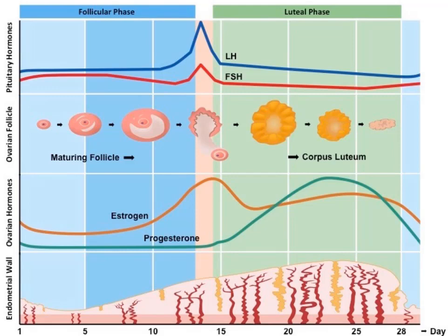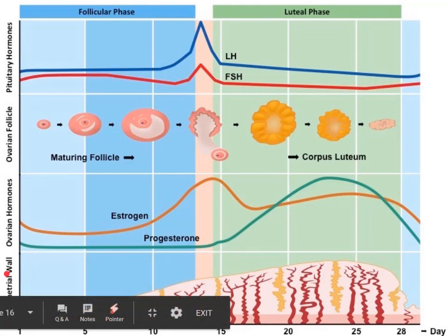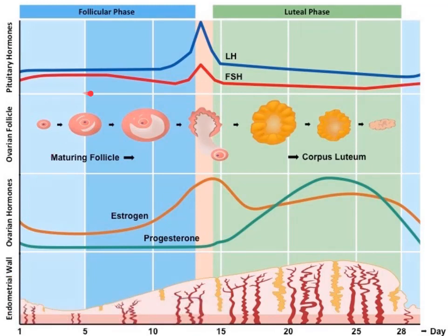In the follicular phase, follicle-stimulating hormone gets secreted from the anterior pituitary and it stimulates the growth of the ovarian follicles. The dominant follicle produces estrogen, which inhibits FSH secretion — that's negative feedback — and prevents other follicles from growing, so you only want one egg. Estrogen also acts on the uterus to stimulate the thickening of the endometrial layer. During ovulation, midway through the cycle around day 12, estrogen stimulates the anterior pituitary to secrete hormones in a positive feedback manner. This results in a large surge of LH and a lesser surge of FSH. When the LH is released, it causes the dominant follicle to rupture and release the egg — called the secondary oocyte. This is specifically called ovulation.